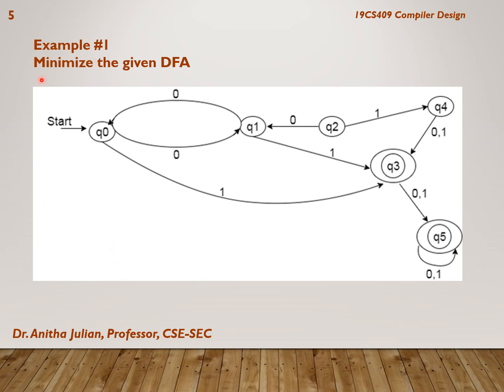We are given an example. The problem will be asked like: minimize the given DFA. As you can see, there are a number of states. Can you tell me how many states there are in this DFA? Count the states and also look for unreachable states. In step 1 we have to find the unreachable states, so we will start with the initial state. From Q0, am I able to go to Q1? Yes, there is an arrow. From Q0, am I able to go to Q2? I want you to find out the number of states and which states cannot be reached.